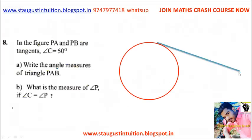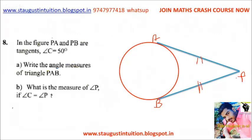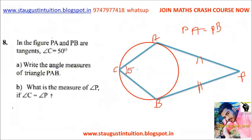Here we have one point, this is P. The points are A and B. We have a theorem — that means PA is equal to PB. Angle C is equal to 50 degrees. Here C is equal to 50 degrees, this is 50 degrees.